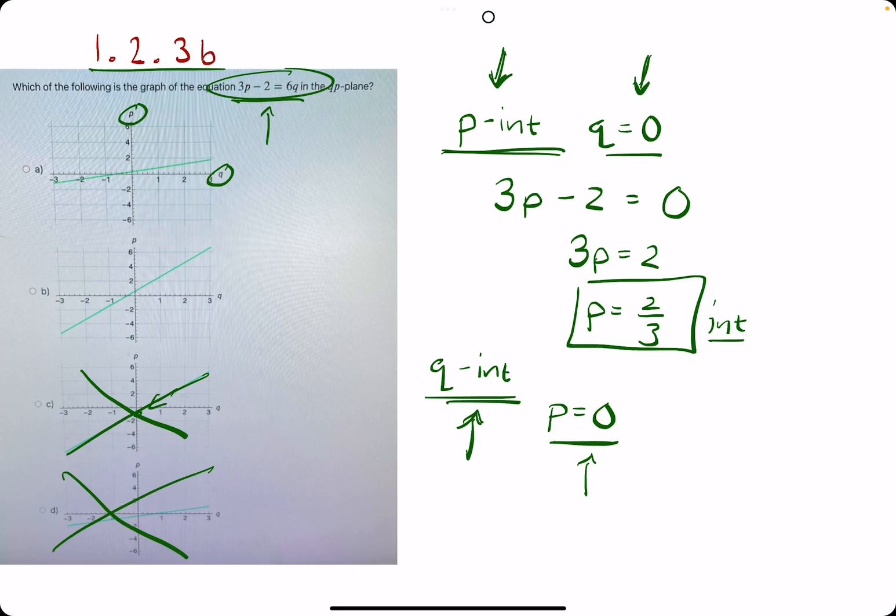We're plugging in 0 for p. 3 times 0 is 0, so we have 0 minus 2, which is negative 2.